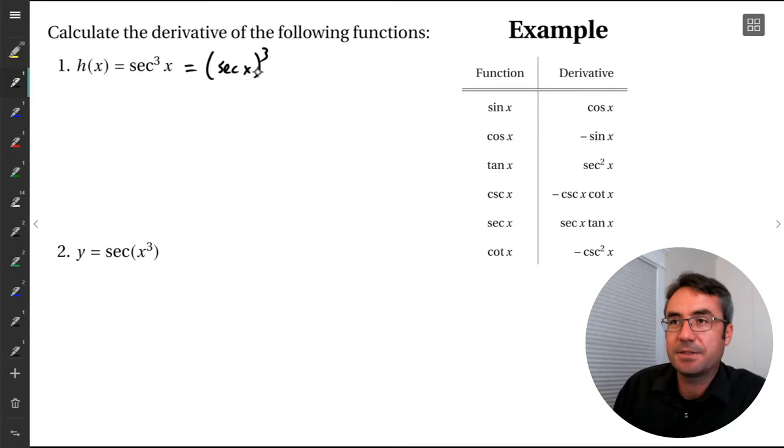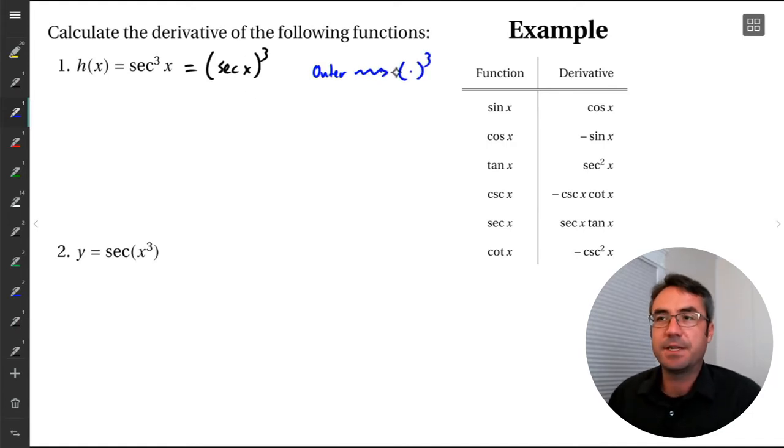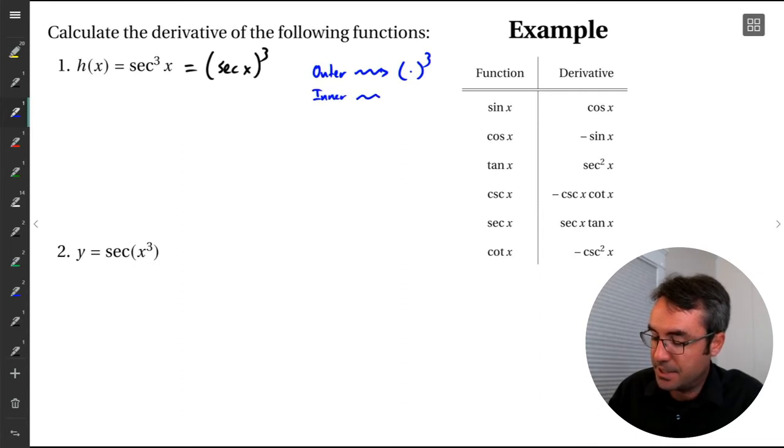It's secant x all cubed. So it makes it clear that our outer function is a power function. So writing it like this, we can see our outer function. The thing that happens last is this raise to the power 3. And then what happens inside the parentheses, that's our inner function. That's our secant x.